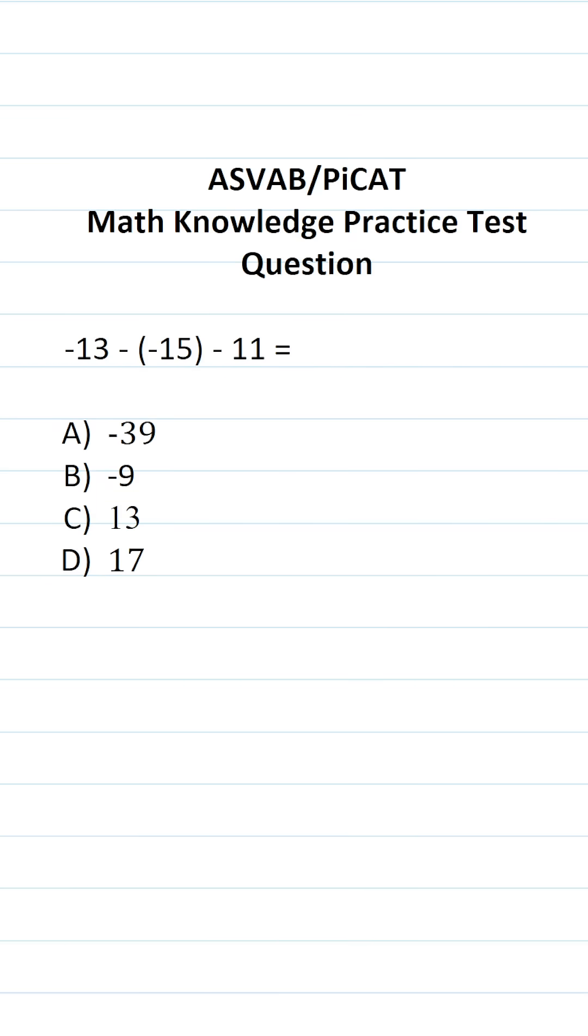This math knowledge practice test question for the ASVAB and PiCAT says negative 13 minus negative 15 minus 11 equals. So again, on the ASVAB and PiCAT, you're not going to be given a reference sheet or a calculator. For that reason, I recommend you get in the habit of copying things down and working them out on your own scratch paper.